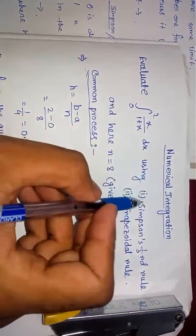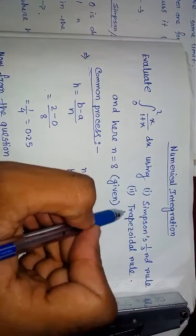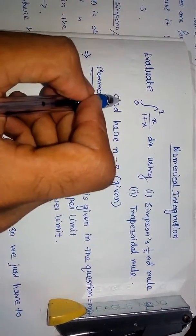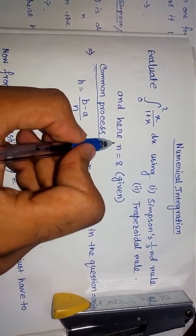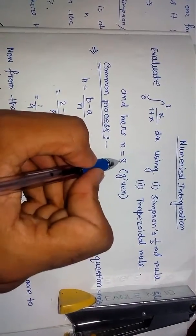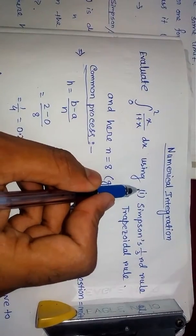First, I will tell you that in this chapter we have two types of questions: one is Simpson's 1/3 rule and one is trapezoidal rule. Here it is also given that n equals 8. In every question, the value of n will be given and it can vary.